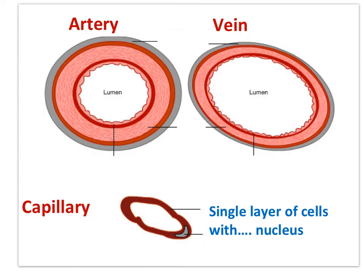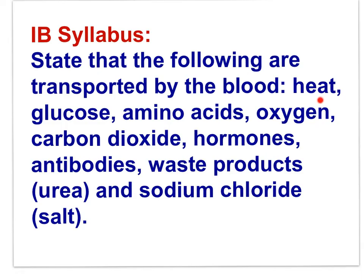Capillaries have permeable walls that allow for the exchange of materials between body cells and the blood in the capillary. Remember all of what blood transports: heat, glucose, amino acids, oxygen, carbon dioxide, hormones, antibodies, waste products such as urea, and sodium chloride. Could you relate the solubility of these substances in water to their transport in blood? Glucose and amino acids are quite soluble in the plasma of blood, but if proteins are to be soluble, their R-groups will need to be hydrophilic. Oxygen is not very soluble in water, but in blood, most of the oxygen is transported by hemoglobin.